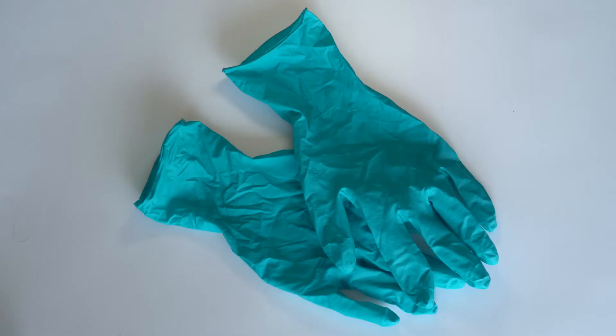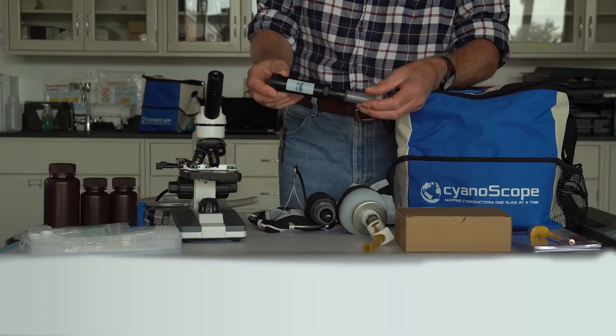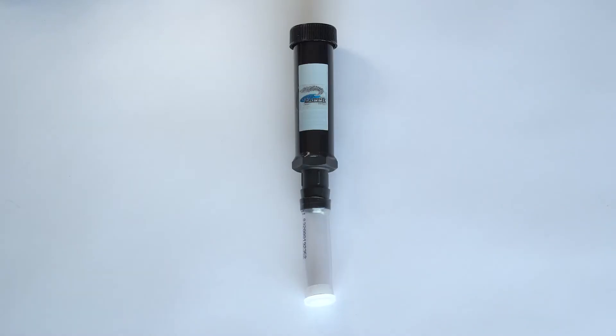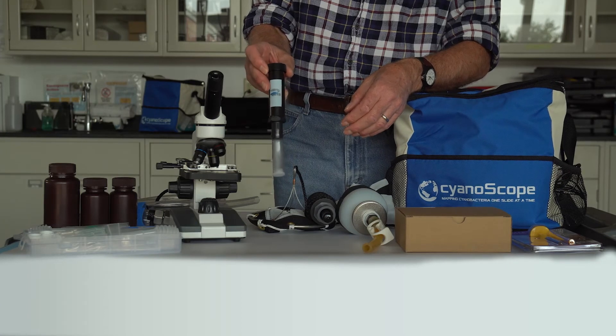Gloves are also included to protect your skin from the cyanobacteria. The pocket zapper is a tool that helps you gather a sample of cyanobacteria. To use it, you will pour a small amount of collected material into the zapper and stand it upright by clipping it to the side of the bag for approximately 30 minutes.